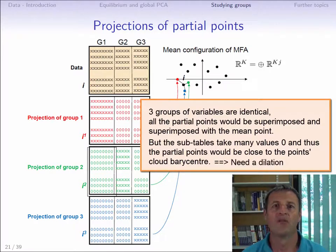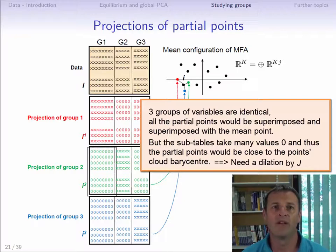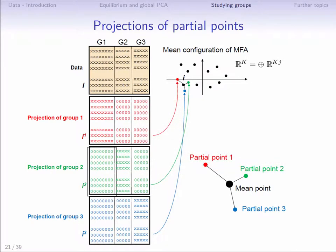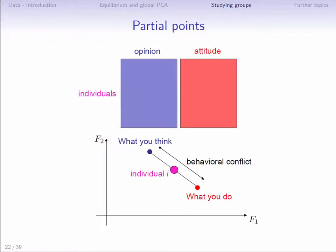Thus, the projection of all the partial points must be dilated by a factor of 3 in our example. When the dataset has J groups, the partial points must be projected as supplementary points and then dilated by a factor of J. With this dilation, we have for each individual as many partial points as there are groups, and the mean point corresponding to the individual seen in the global analysis is at the barycenter of the partial points. The partial points representation is therefore very useful since it makes it possible to compare the representation of individuals from one group to another.